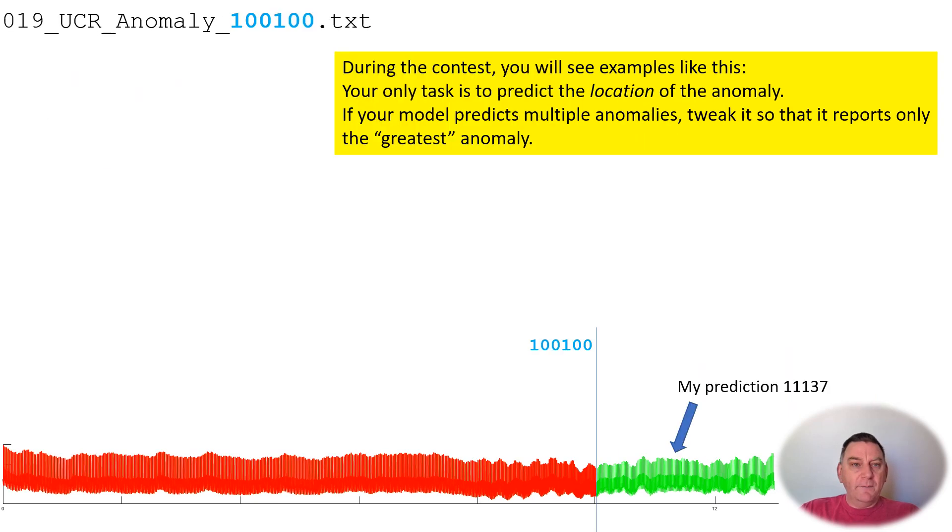You get instead something like this: just the name of the file and the location that divides the training data from the test data. Your job is simply to examine the red data and predict the location of the anomaly in the green data.